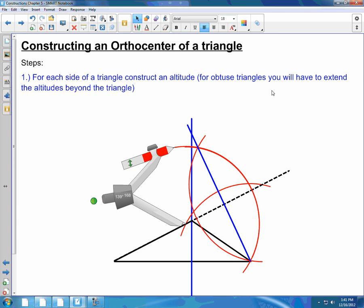Remember that the orthocenter is the point of concurrency for the altitudes of a triangle. So in order to find the orthocenter, we have to construct an altitude for each side of the triangle.